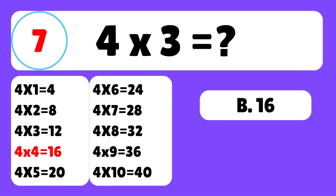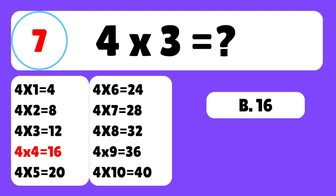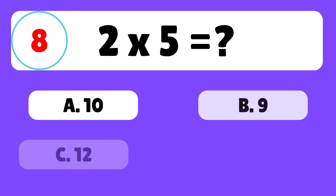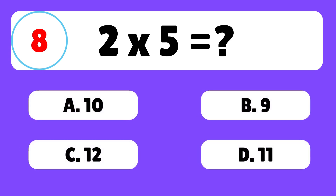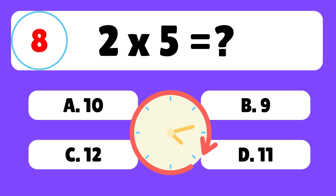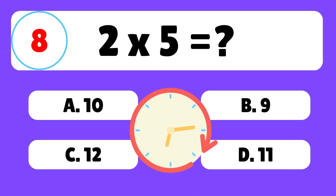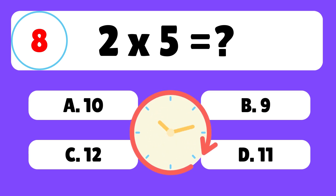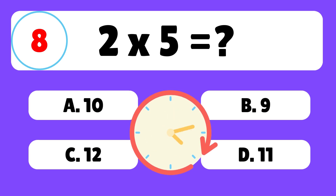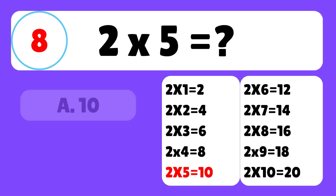Question 8. What is 2 times 5? The answer is A. 2 times 5 is equal to 10.